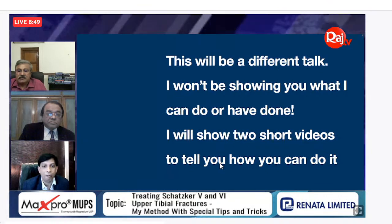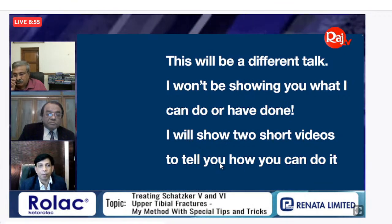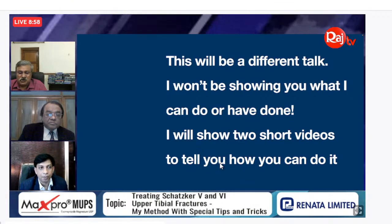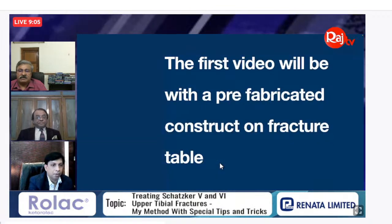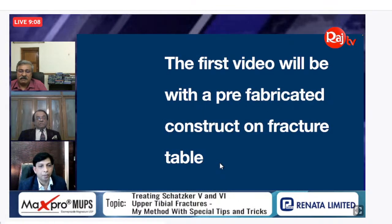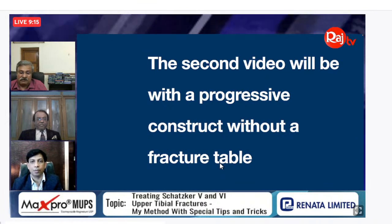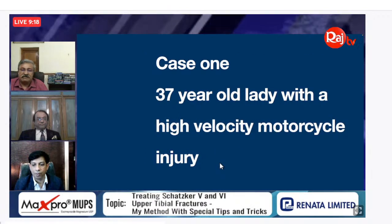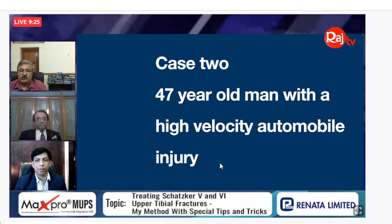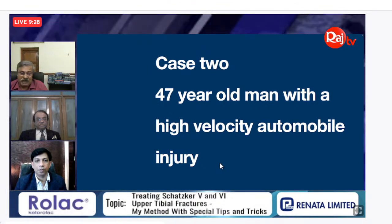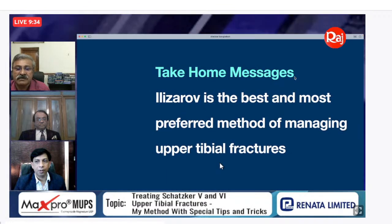This will be a different talk — I won't be showing results before and after. I will show two short videos: how I do a progressive construct and a prefabricated construct. The first video will be a prefabricated construct on a fracture table; the second will be a progressive construct without a fracture table. Case one is a 37-year-old lady with a high-velocity motorcycle injury, and case two is a 47-year-old man with a high-velocity automobile injury.